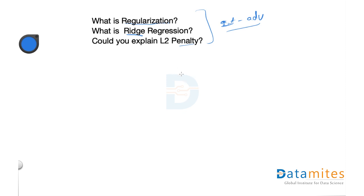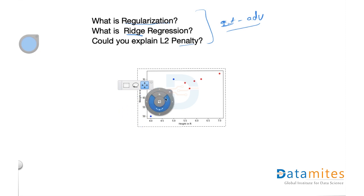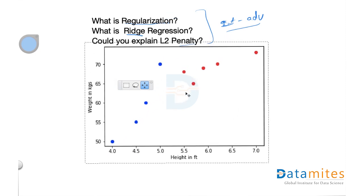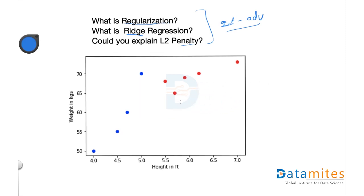To explain this, let me take a quick example. So this is a quick example where you have height in feet and weight in kilograms. Let's say for a human being. So a person who is around 4 feet is about 50 kilograms and 4.5 feet is about 55 kilograms, so on and so forth. So I have taken blue dots for training data and red dots for testing data.